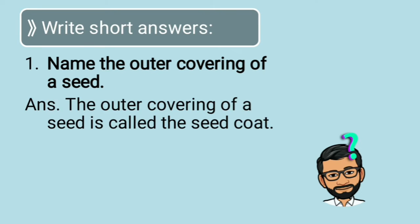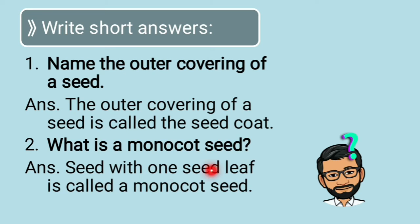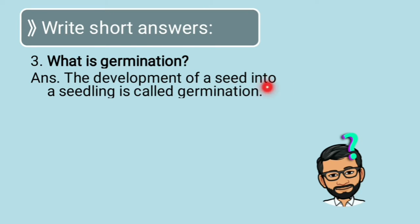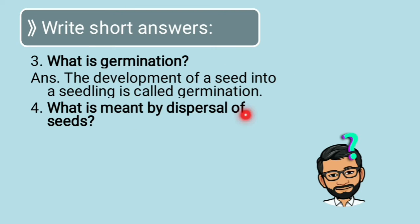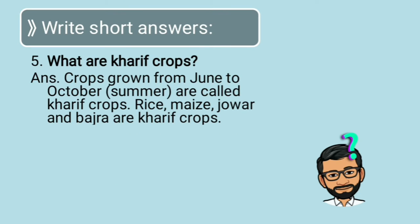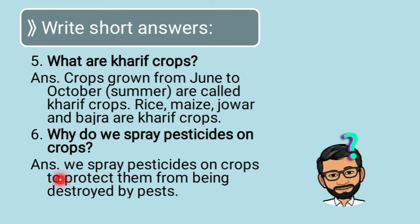Short answers: The outer covering of a seed is called seed coat. A seed with one seed leaf is called monocot seed. The development of a seed into a seedling is called germination. The scattering of seeds or fruits away from their parent plant by agents of nature is called dispersal of seeds. Crops grown from June to October are called Kharif crops — rice, maize, jowar, and bajra. We spray pesticides on crops to protect them from being destroyed by pests.